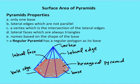Let's talk about the properties of pyramids. We talked before about prisms, now we're going to talk about pyramids. With a prism, we have two bases that are congruent and parallel. With a pyramid, we just have one base, and that base is going to define the type of pyramid that we have. So only one base.